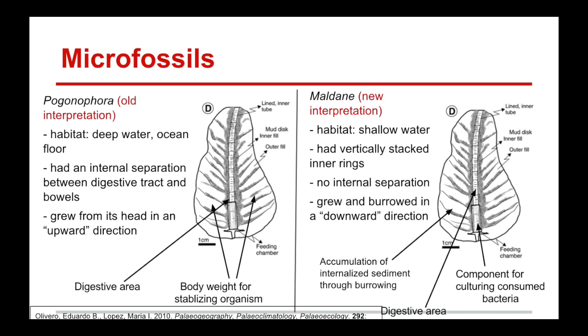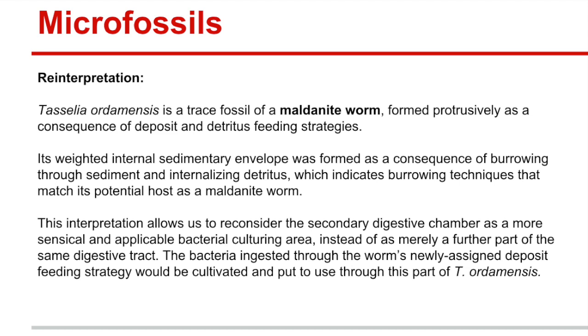Because the Maldanid worm consumed bacteria, it had this extra chamber at the bottom of its structure that took that bacteria and biologically processed it to be useful to the creature's life. Therefore, Tassilia ordemensis was the trace fossil of a Maldanid worm, formed as a consequence of deposit and detritus feeding strategies. Its heavy internal sedimentary envelope was formed from burrowing through sediment and internalizing that detritus, indicating its host was indeed a Maldanid worm. This reinterpretation allows us to reconsider the secondary digestive chamber as a sensical bacterial culturing area, rather than merely a further part of the same digestive tract.